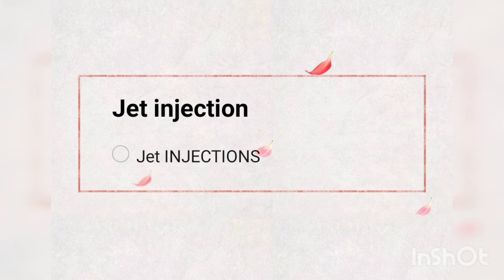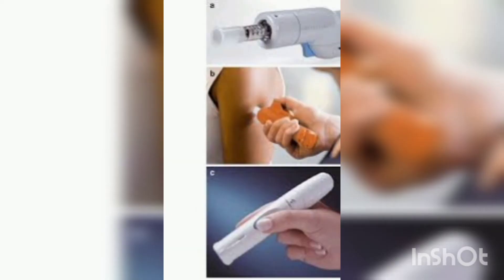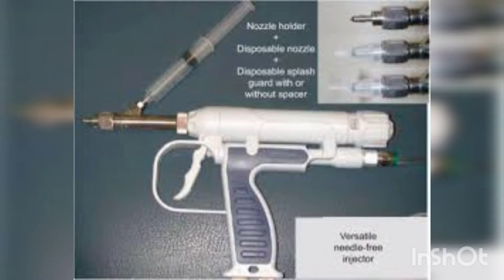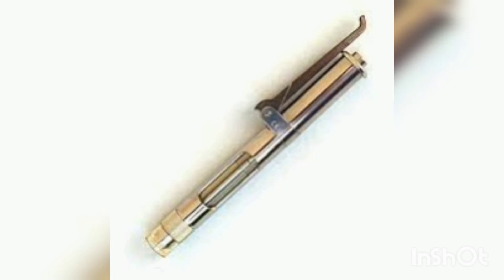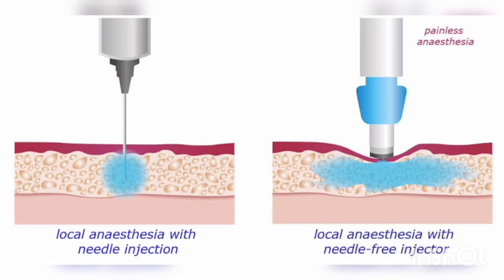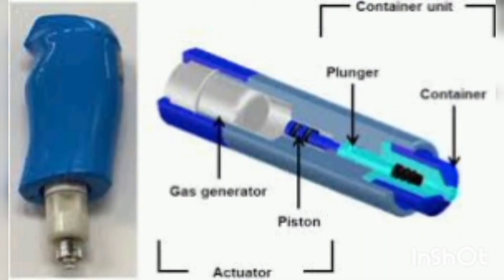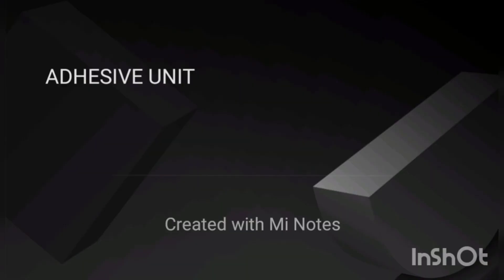Next, jet injection — this method does not require any syringes, so it is painless. Using a gun-like instrument with a microfine orifice, the drug solution is projected as a high-velocity jet, known as the dermajet. The drug passes through the existing layers of skin and gets deposited in the subcutaneous tissue. This method is useful for mass inoculation.